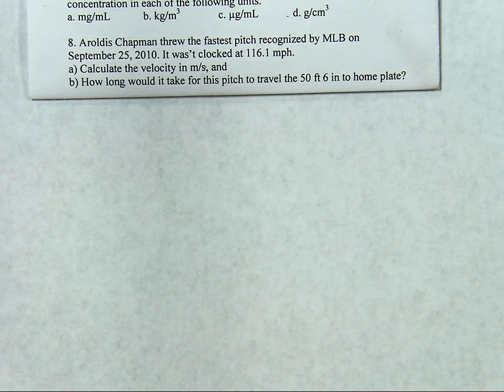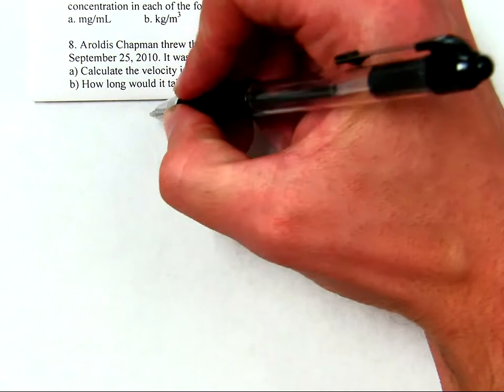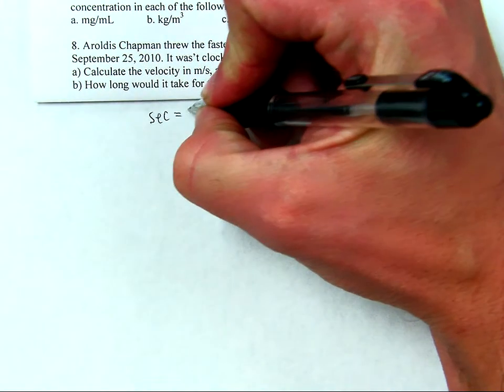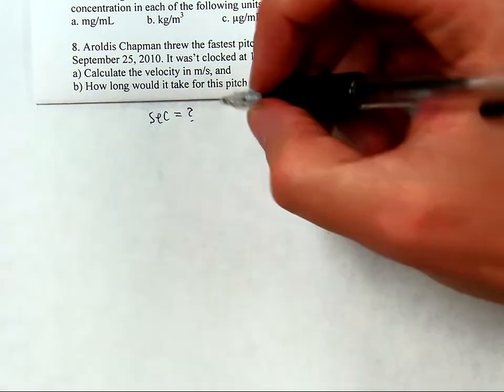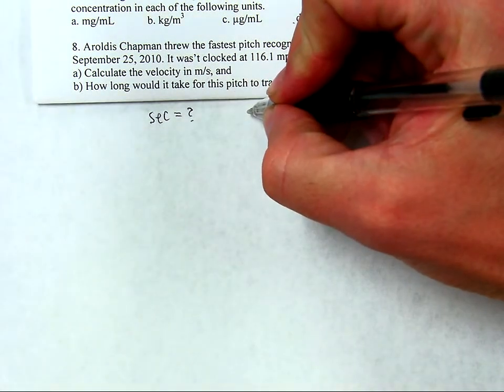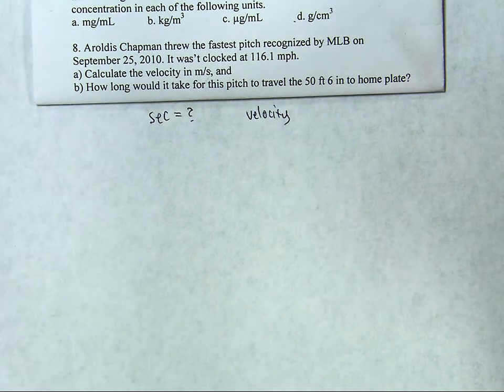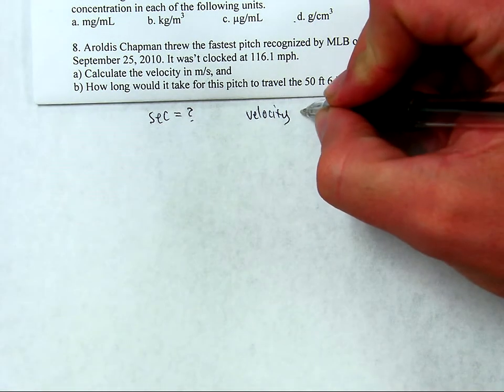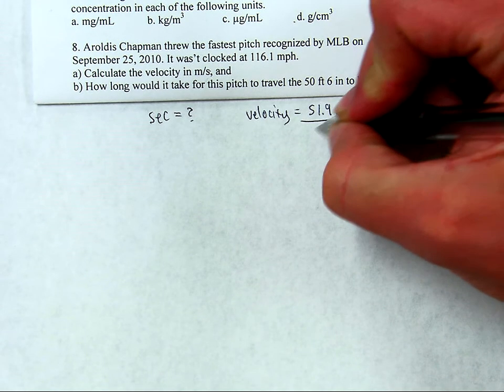My thought is this, I'm going to calculate the time in seconds. Okay, so I'm going to put seconds equals question mark to kind of keep me on focus as to what I'm doing. And I need to think of a strategy for this. So I need to think about how do I get to seconds based on what I have? So I calculated earlier that the velocity of the pitch is 51.9 meters per second.